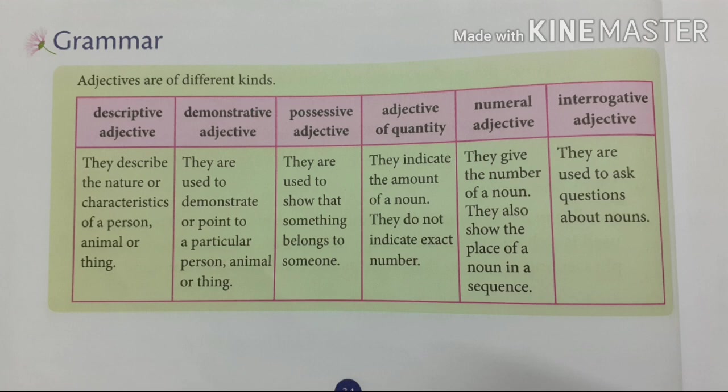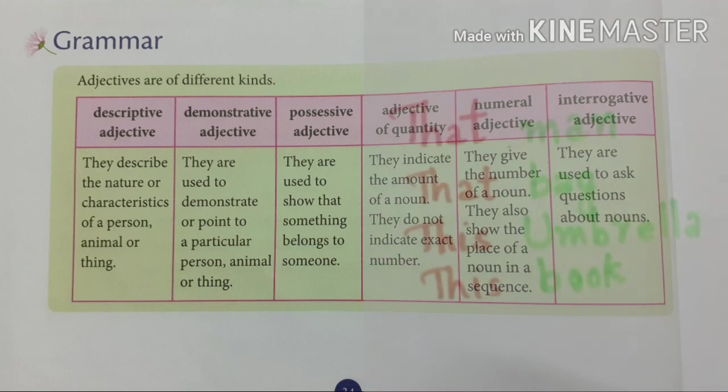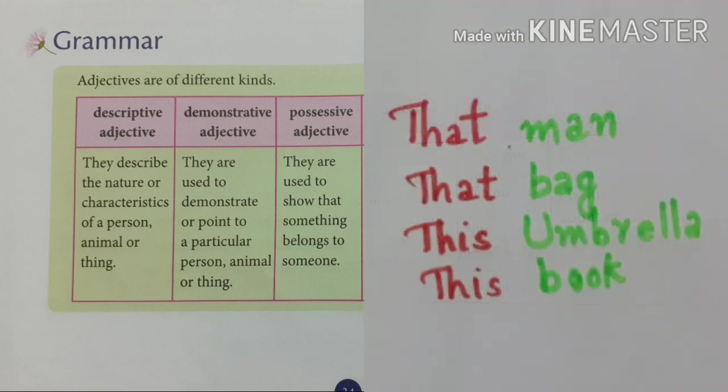The second one is demonstrative adjective. What is a demonstrative adjective? They are used to demonstrate or point to a particular person, animal, or thing. For example: that man, that bat, this umbrella, this book. These are examples of demonstrative adjectives.